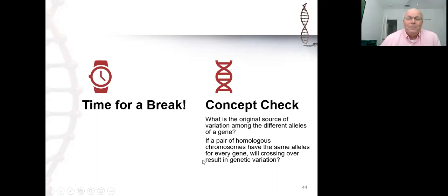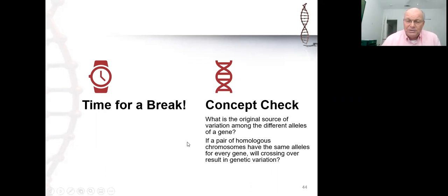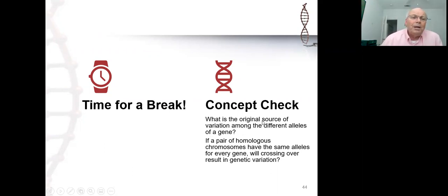So that's it for this chapter — the reason why we need meiosis, how meiosis functions, and the consequences of meiosis as part of sexual reproduction. You need to be familiar with these concepts because we'll build on them in the next two chapters as we talk about inheritance patterns. If you have any questions, come see me in office hours or send an email. I'll see you when we talk about the work of an Austrian monk you may have heard of — Gregor Mendel.